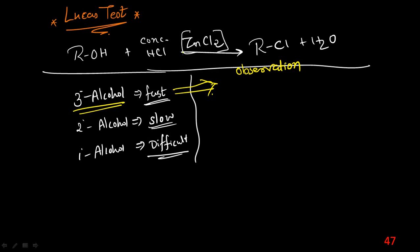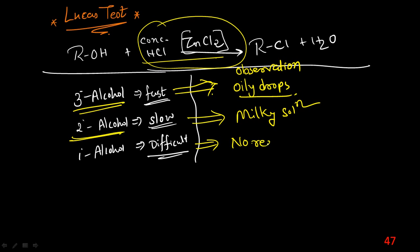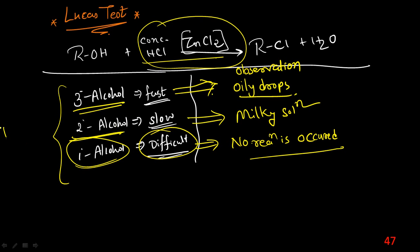Observations in the Lucas test: when tertiary alcohol is given, oily drops form in the reaction mixture. If a milky solution is obtained, the alcohol is secondary. If no reaction occurs — because the reaction is too difficult — the alcohol is primary. This is the detection test to identify what type of alcohol is given to you.